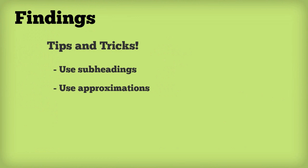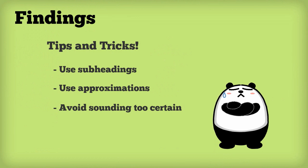We also need to be careful about sounding too certain. It's good to sound like we know what we are talking about, but in the real world, we can never be 100% sure. It's usually a good idea, in academic writing, to hedge a little. Hedging just means giving ourselves a little room to be wrong.